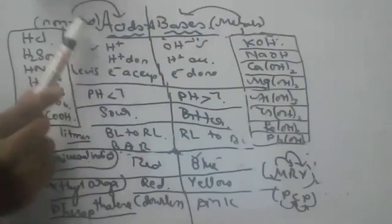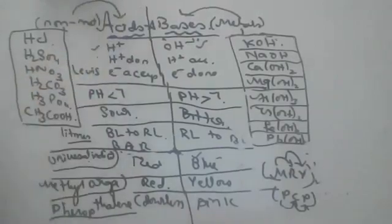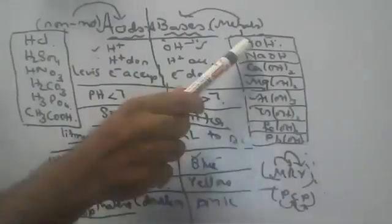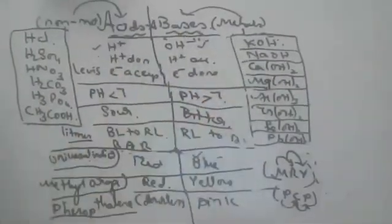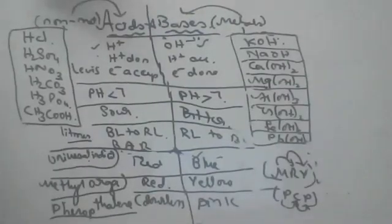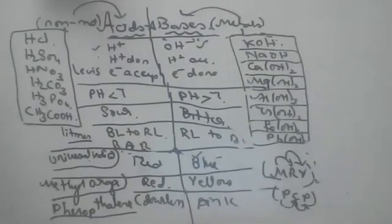Who accepts electrons? Non-metals. So non-metals always form acids; metals always form bases. That's why our blood is basic in nature — because our blood contains iron, which is a metal.